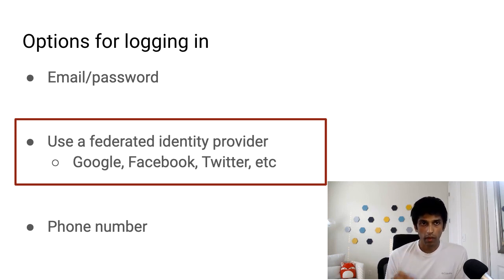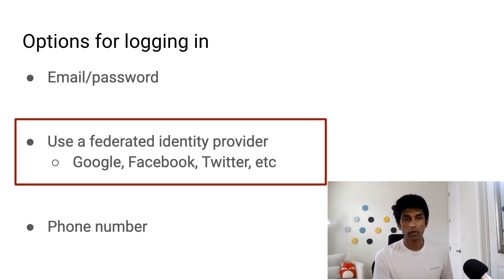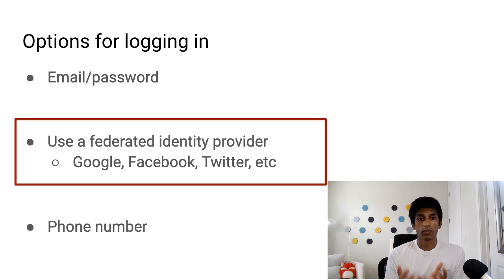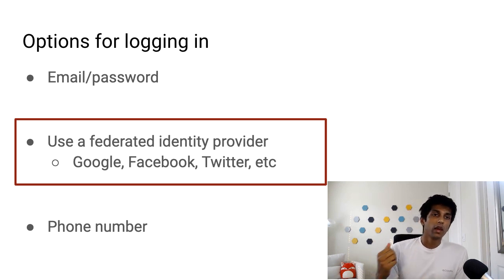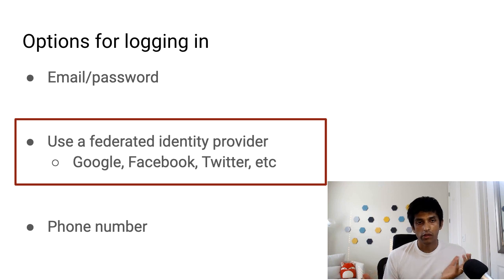The reason I prefer this method is that with email and password, no one wants to remember another password. If you're already signed into Google or Facebook, it's the easiest way to get people into your app. Additionally, using Google or Facebook sign-in allows us to bootstrap the user profile — we get information like the display name and photo URL of the user, a profile picture, that makes your app feel more complete.